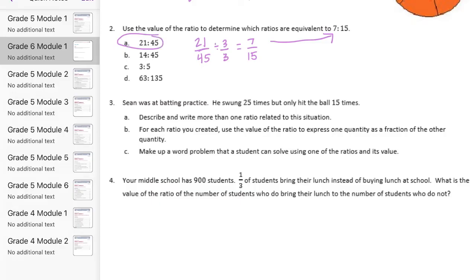The next one, B, is 14 to 45. Now I already know that the one above it worked and they have the same second number in the ratio of 45 with a different first number. So if 21 to 45 worked, 14 to 45 is not going to work. 3 to 5.